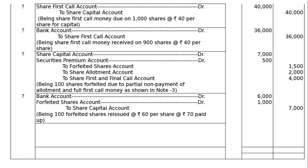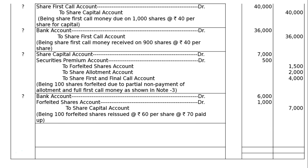Entry 8 — reissue of forfeited shares: Bank account debited (100 × 60 = Rs.6,000), forfeited shares account debited (100 × 10 = Rs.1,000) — to share capital account (100 × 70 = Rs.7,000). Being 100 forfeited shares reissued at Rs.60 per share, Rs.70 paid up. Entry 9 — capital reserve: Forfeited shares account debited to capital reserve account — that is 1,500 − 1,000 = Rs.500. Note: I mistakenly wrote 960; the correct answer is 500.